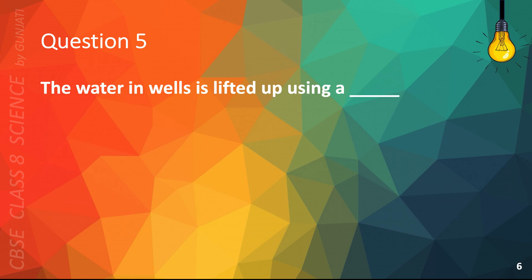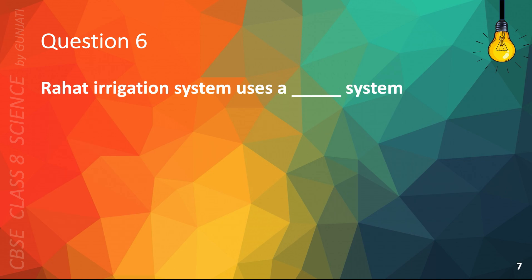Question 5. The water in wells is lifted up using A. Pulley, B. Lever, C. Hammer, or D. Screw. The correct answer is A. Pulley.